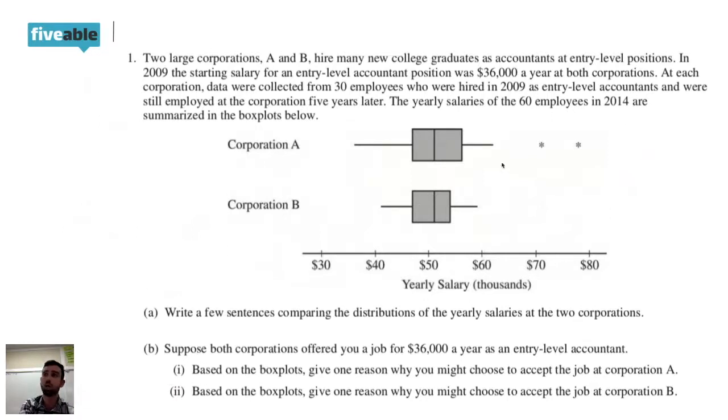So Corporation B, although it doesn't have as high of a max, the data is not as spread out. So you have more confidence because the spread is smaller that you'll make somewhere between this amount of money, right? $42,000 and $60,000. So the probability of making something between there is higher in Corporation B than in Corporation A.